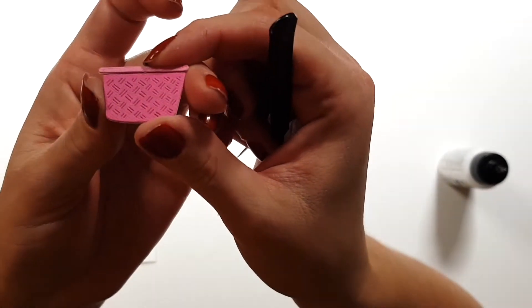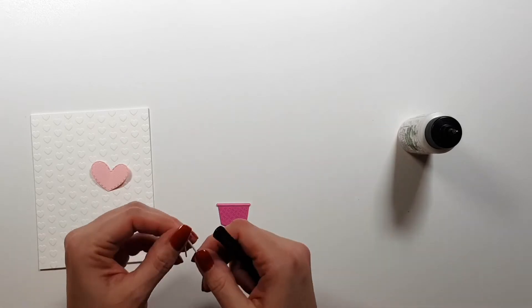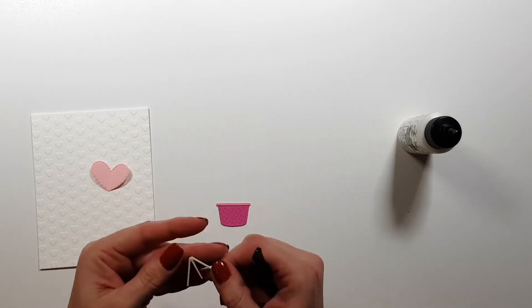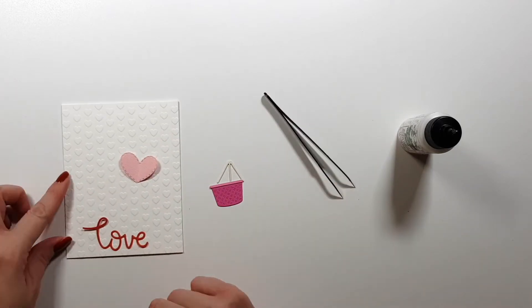This is the other part of the Love is in the Air set - this is a basket that you can also hang on the balloon.